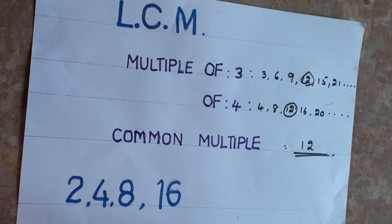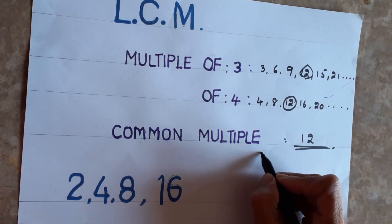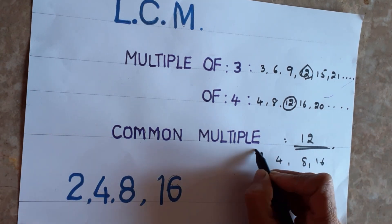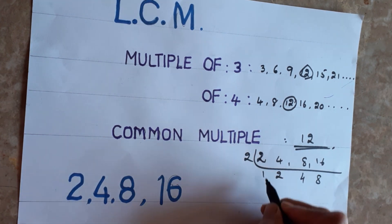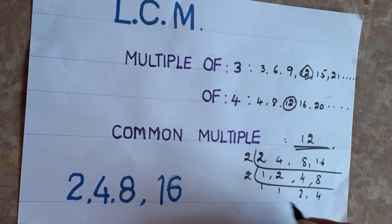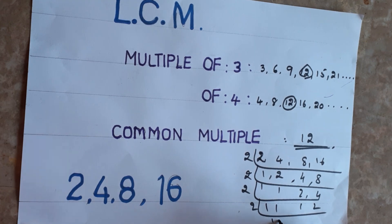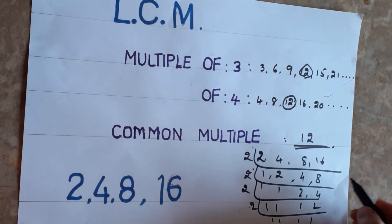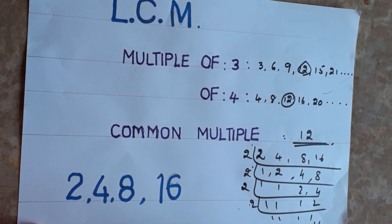Now I'll show you how to find LCM within seconds. For example, if the numbers are 2, 4, 8, and 16 — in the traditional method, you divide: 2 goes into each, giving 1, 2, 4, 8; then 2 goes again giving 1, 2, 4; and so on until you get 1. Then you multiply: 2 × 2 × 2 × 2 = 16. So LCM is 16.